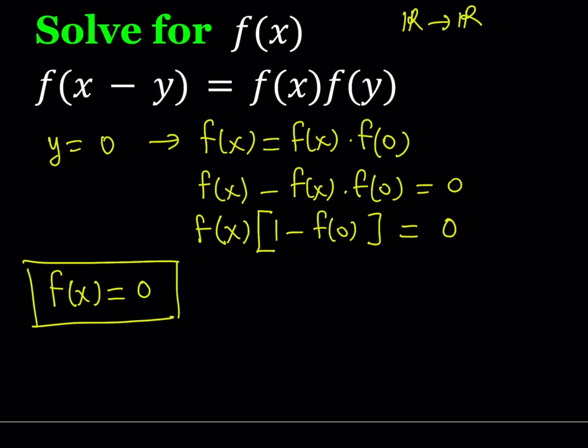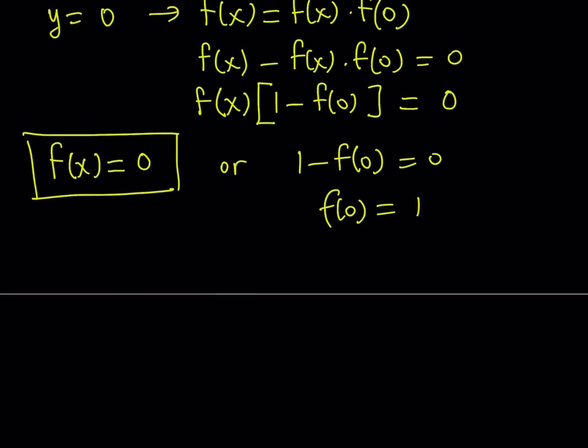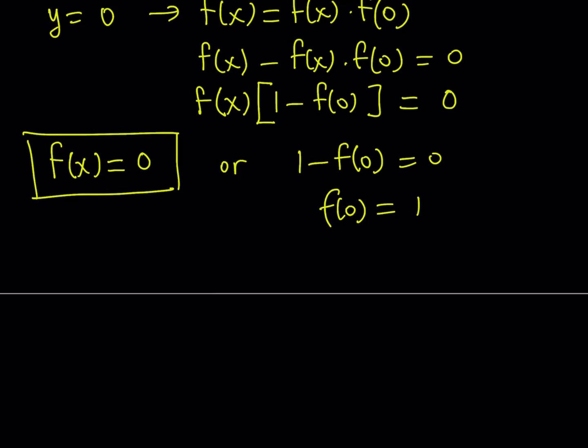If this is not the case we can say either this or this must be true, one of them has to be true, and from here we get f of 0 equals 1. This doesn't have to be true if f of x is equal to 0, we don't have to have f of 0 equals 1, but let's just keep that in mind.